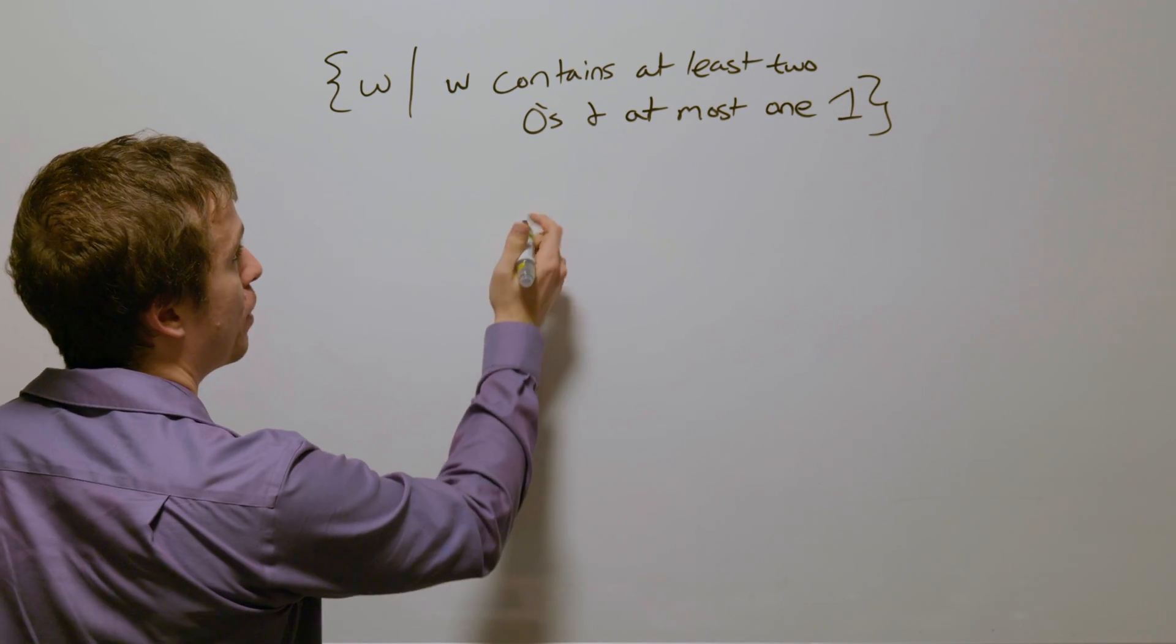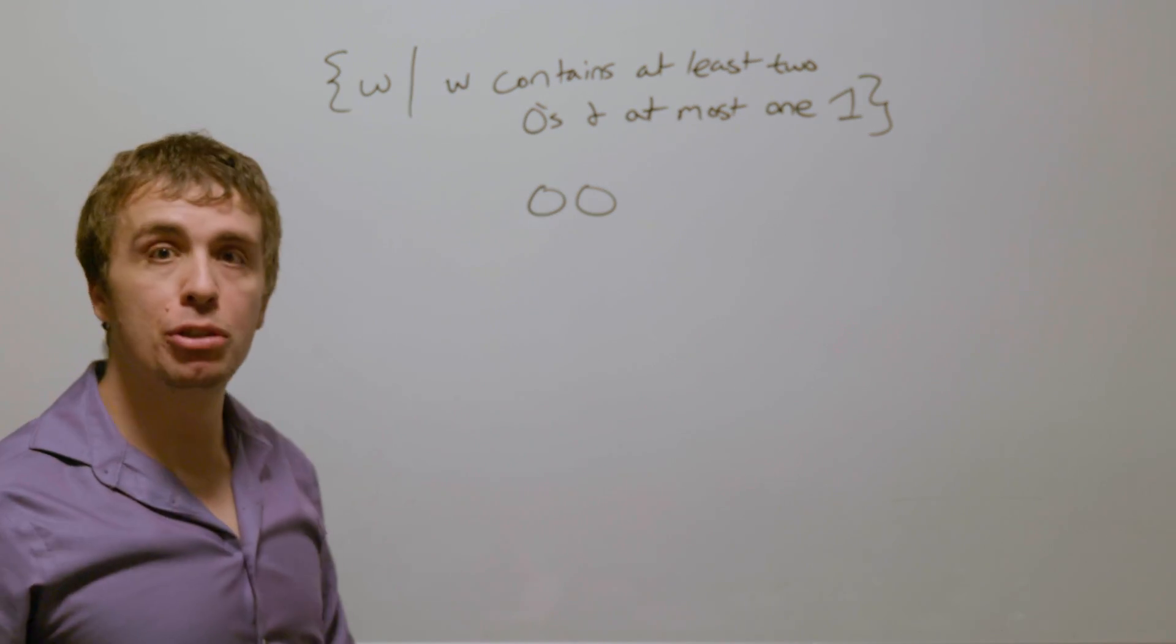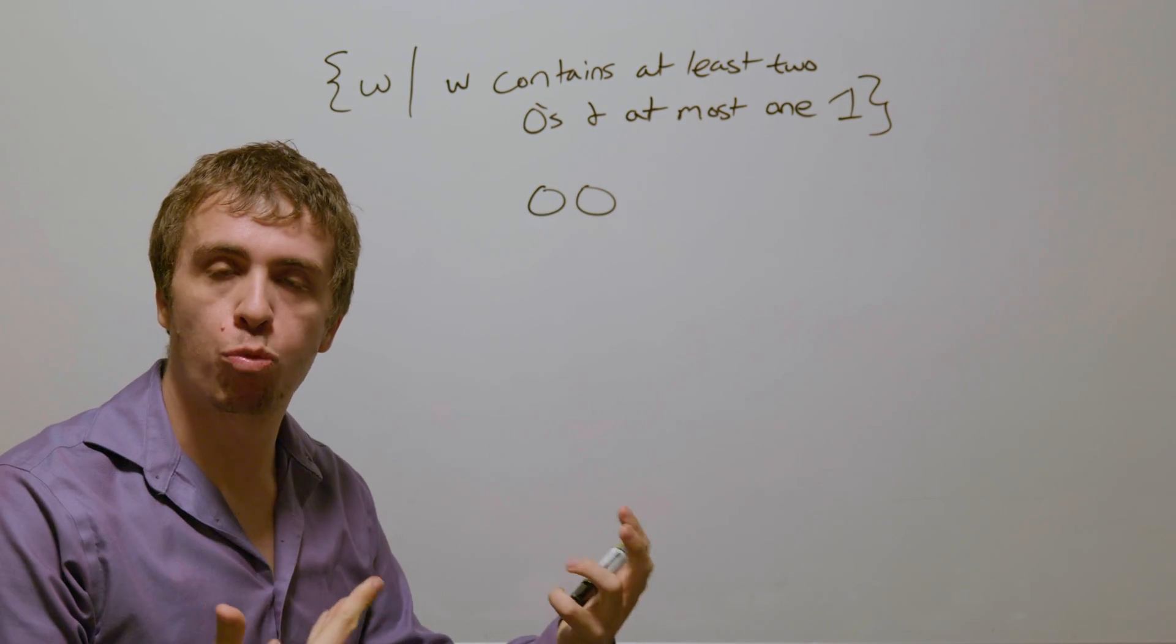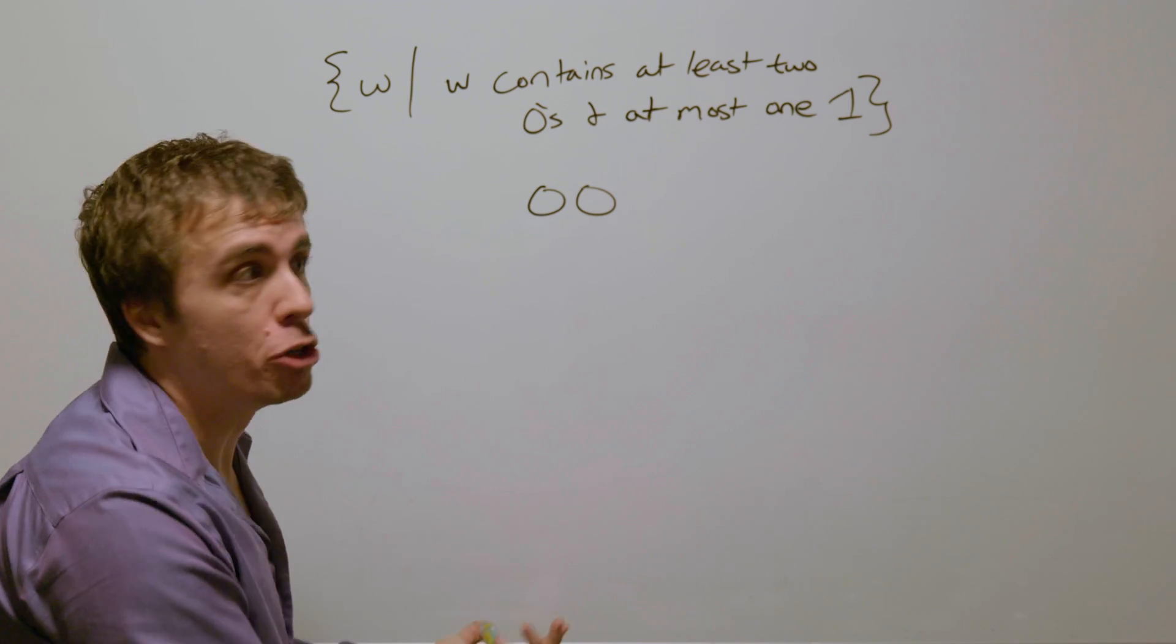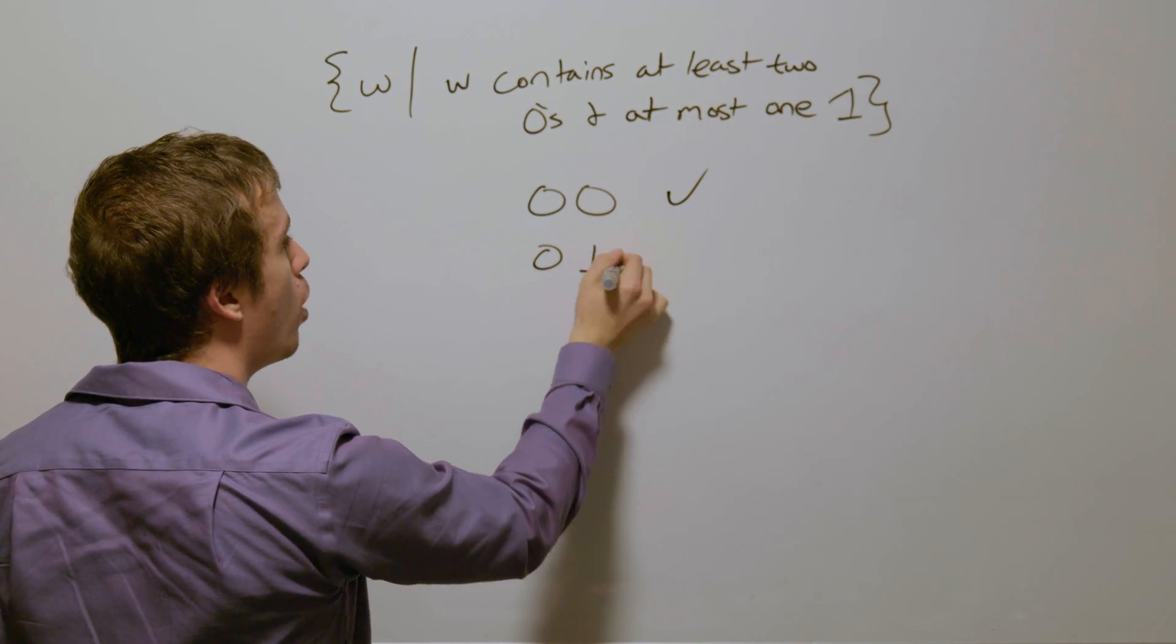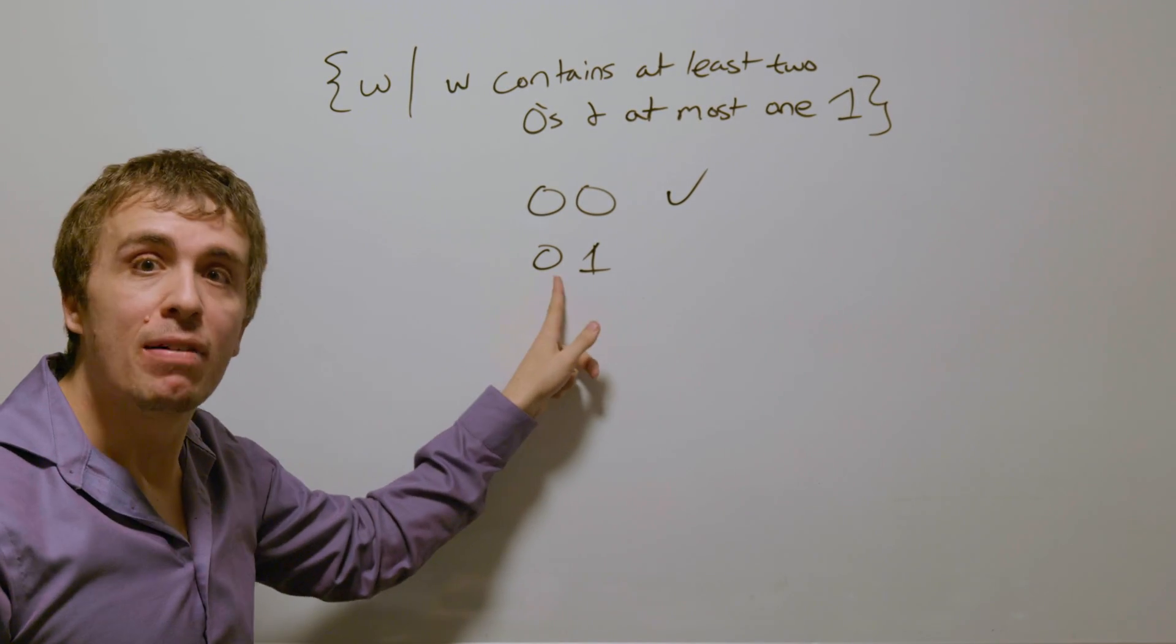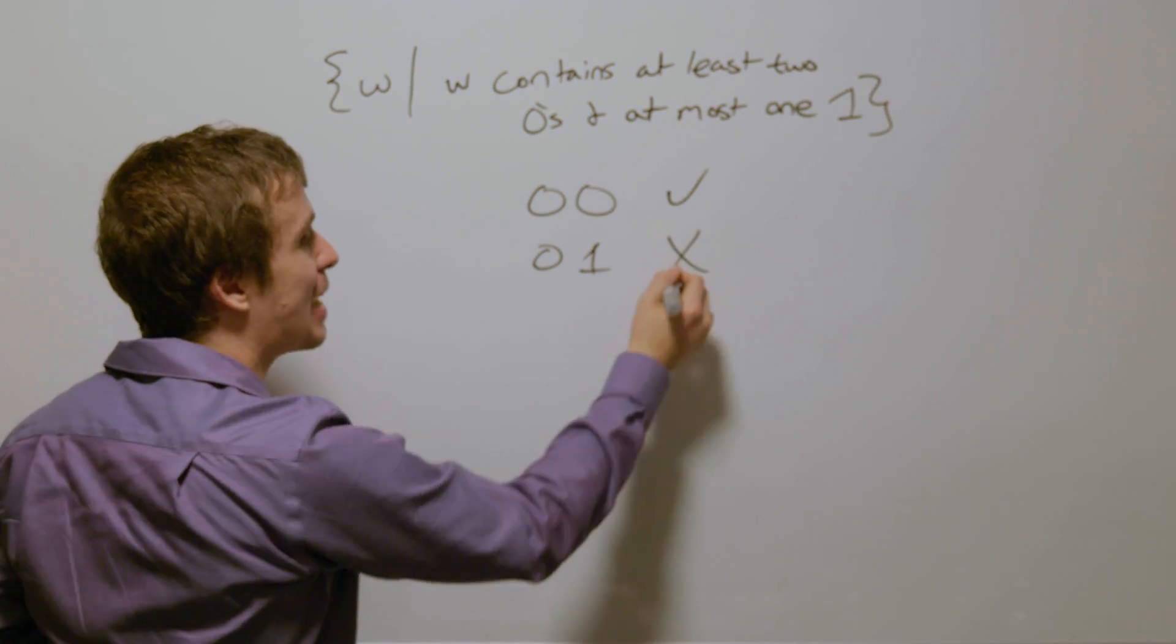So let's look at some examples. If I have two zeros in a row like that, it contains at least two zeros and it has at most one occurrence of one, namely zero, and so therefore this should be accepted. If we have zero one, that has at most one one, but it does not have at least two zeros and should not be accepted.